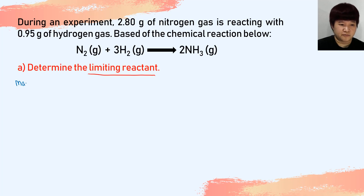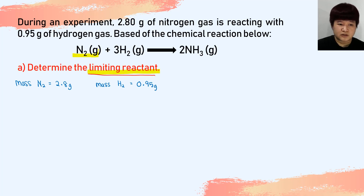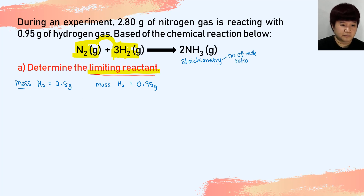To determine the limiting reactant, we know the mass of nitrogen gas given is 2.8 g and the mass of hydrogen gas given is 0.95 g. We look at the stoichiometry of N₂ and H₂ in the equation: 1 mole of N₂ reacts with 3 moles of H₂. Since stoichiometry must be done in mole ratios, we need to convert each mass to moles, so we need the molar masses.